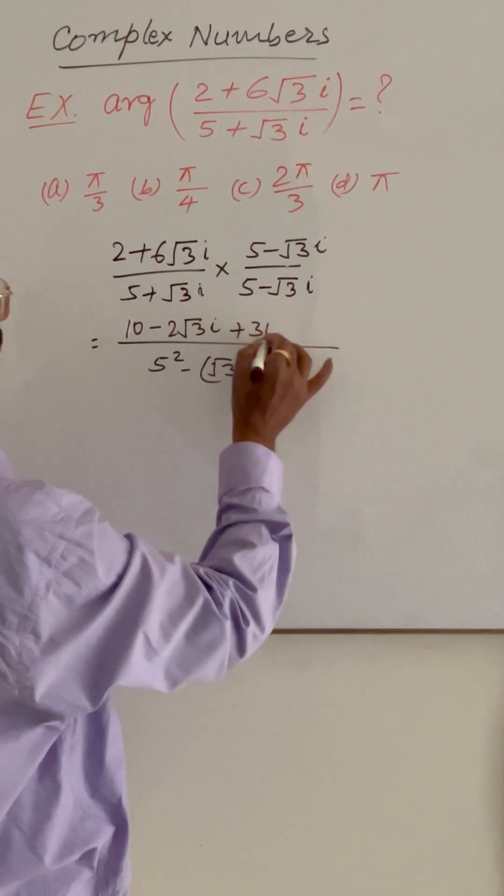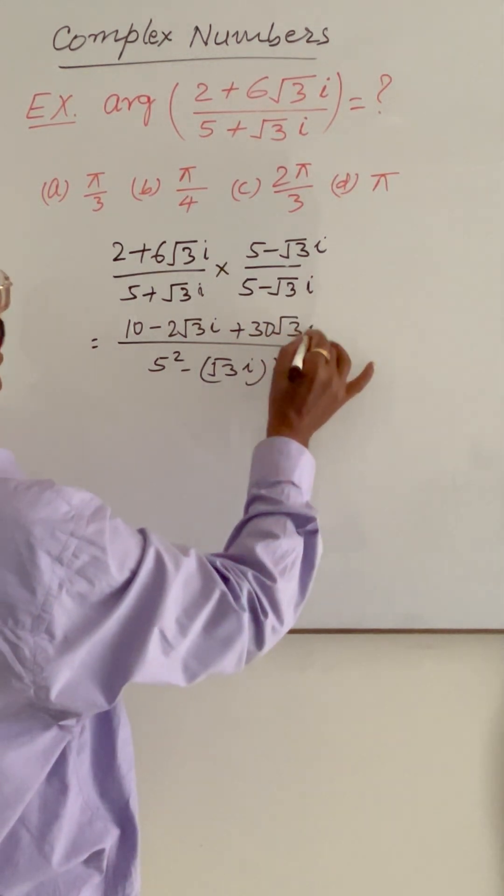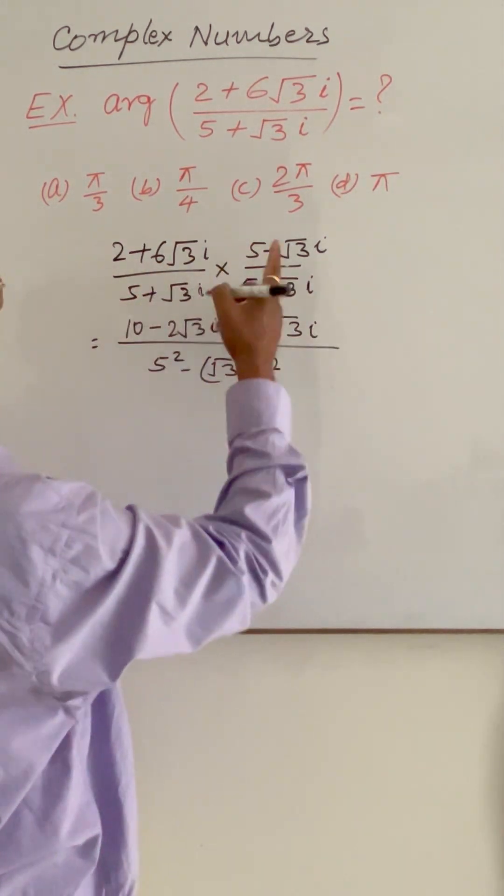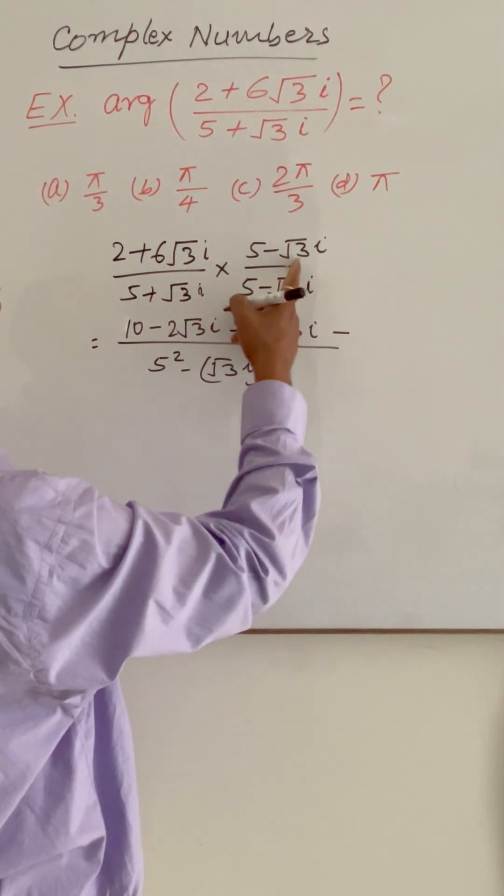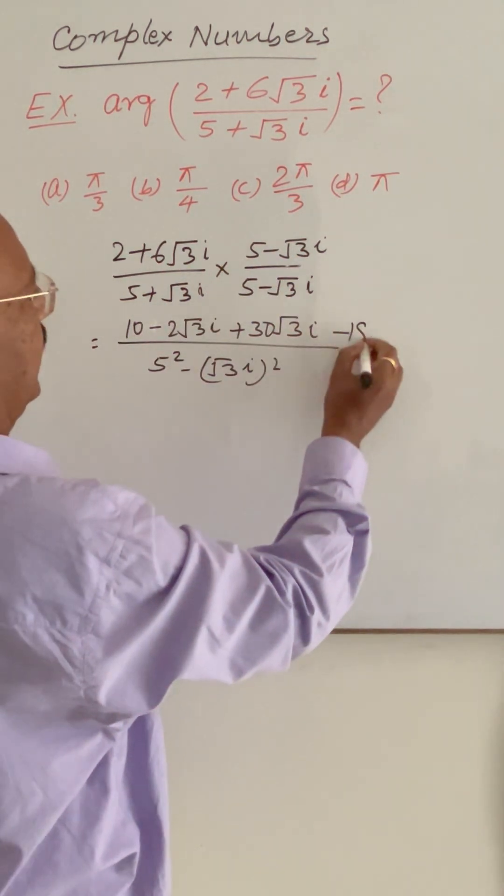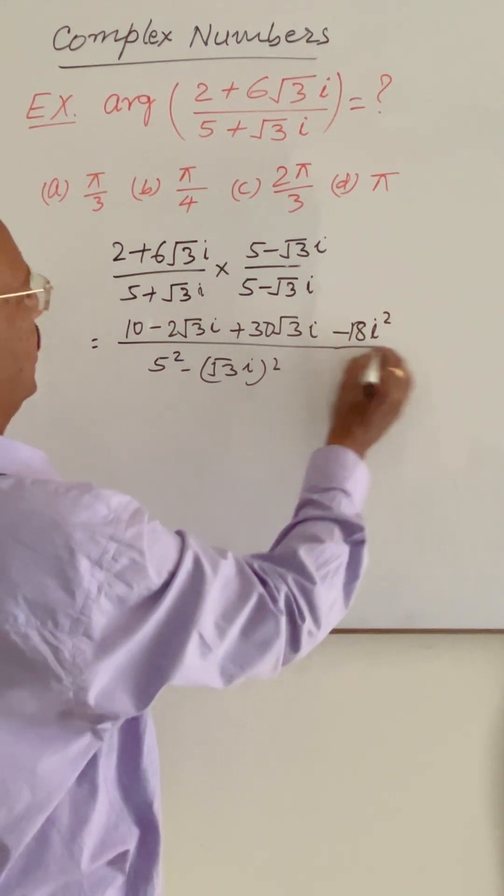This is 30 root 3i. And plus minus minus root 3 into root 3 is 3 into 6 is 18i square.